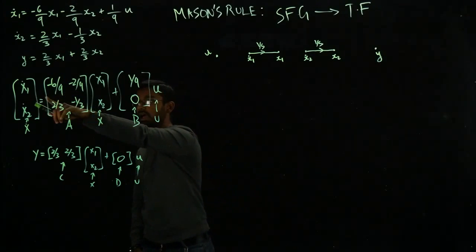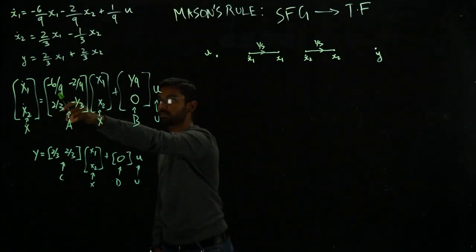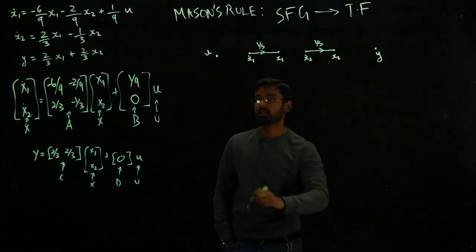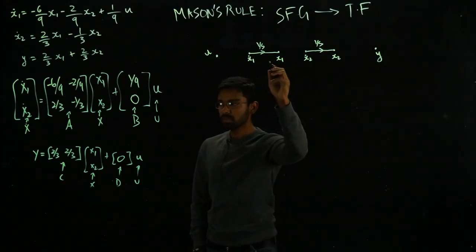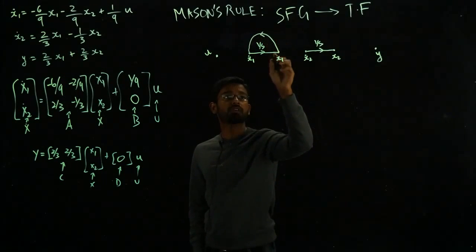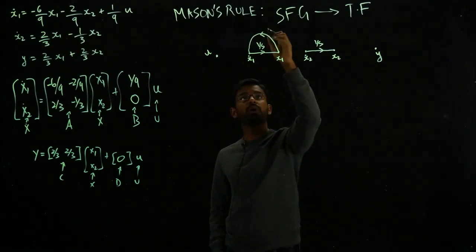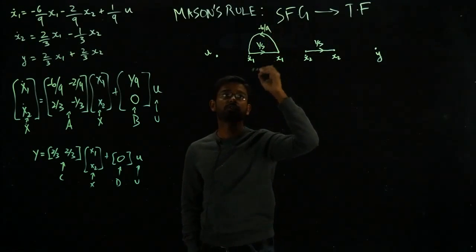Now I need to know how x₁ dot is generated. It is getting multiplied with minus 6 over 9 times x₁. So I am going to make a connection backwards. You can think of it like feedback. So x₁ contributes to x₁ dot. And then the gain or how much it is being multiplied by will just go on top here. Minus 6 over 9.